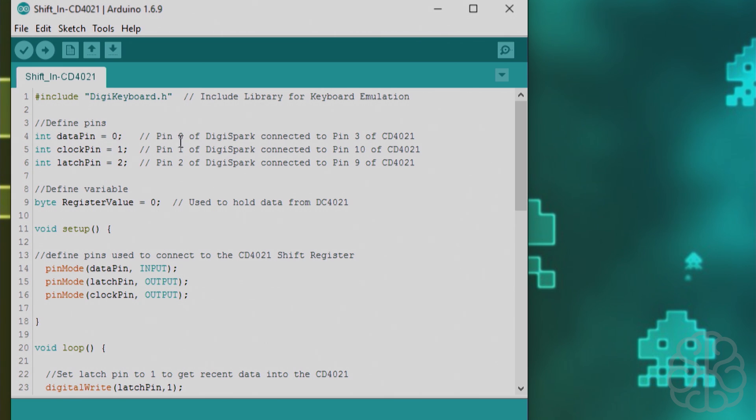Pin 0, 1, and 2 of the DigiSpark is connected to the corresponding pins of the CD4021. You see a little picture here of the pins. Then we define a variable, it's a byte variable registerValue, put it at 0 at the beginning. It's used to hold the data from the CD4021. The way this works is we call for the information in the register and we put that in a byte, since it's an 8-bit shift register.